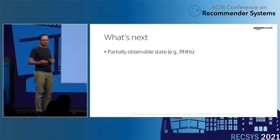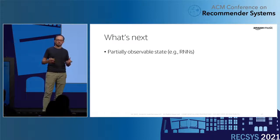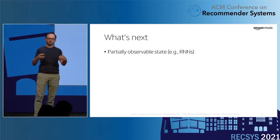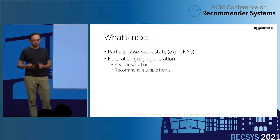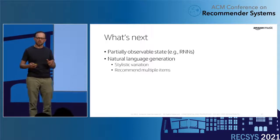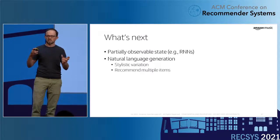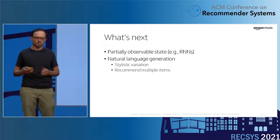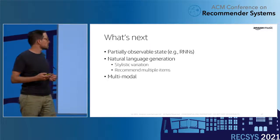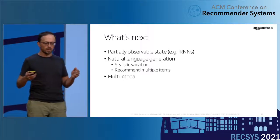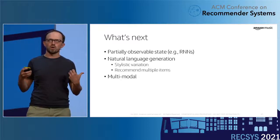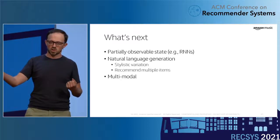In terms of future work, we want to investigate moving from fully observable states to partially observable states, where the model learns from dialogue history what to say next. We also want to look at more fine-grained variation, like natural language generation to control stylistic variation and whether we can recommend multiple items in a single utterance. We also recently launched our first multimodal experience for our conversation, so an interesting area is training a policy that predicts both voice actions and visual actions.